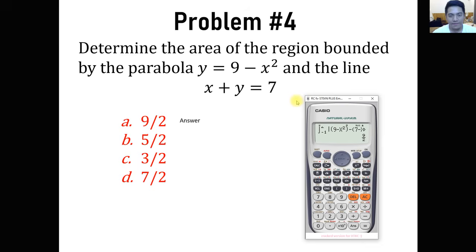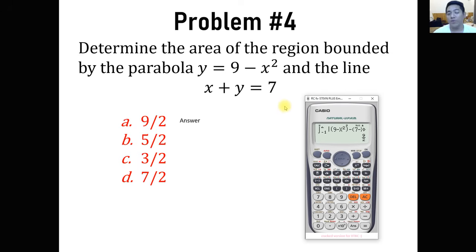So again: if we don't have any visible limits, we need to solve first for the limits using shift-solve, getting the negative and positive intersection values. Then use the formula — integral with absolute value — of y upper minus y lower, or x right minus x left. Our answer is 9 over 2.